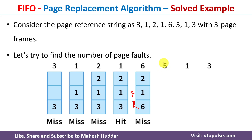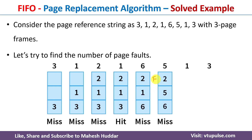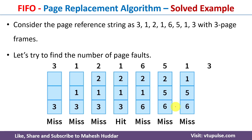Next, page reference 5 is not present in primary memory. The page at the front — 1 — is replaced with 5. Front moves to the next place and rear moves to the next place as well. Then page reference 1 is not present in primary memory, so 2 is replaced with 1. Front and rear are updated accordingly.